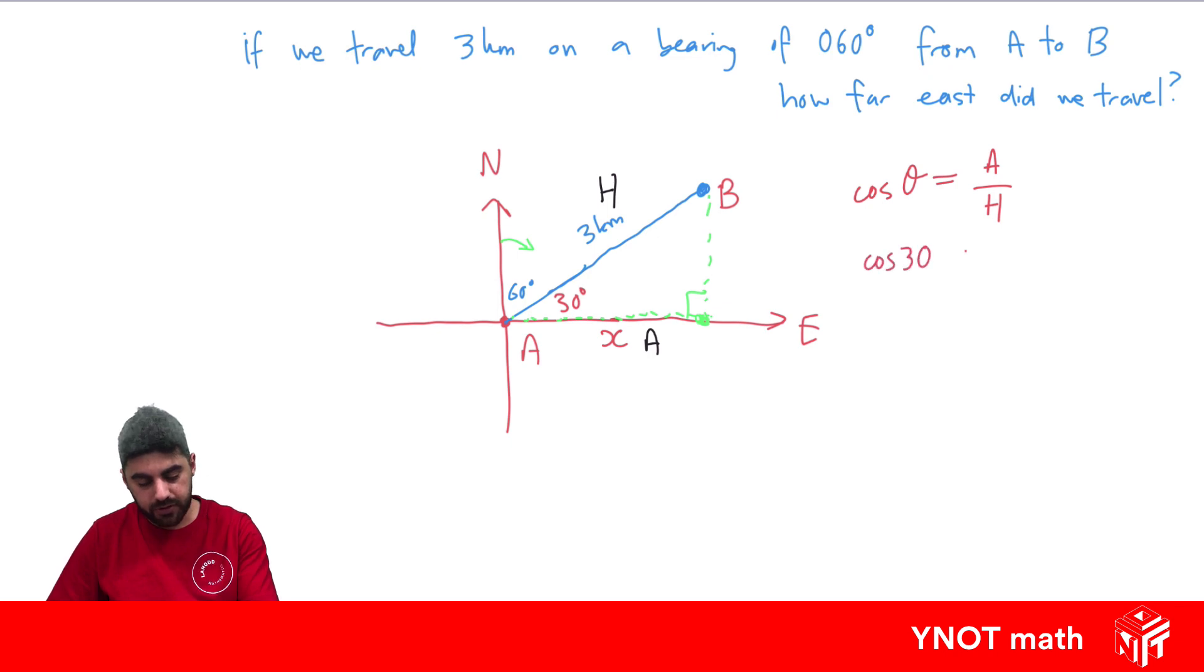Put in everything we know. The angle is 30, equals our adjacent side, which is x, over our hypotenuse, which is 3. Multiply both sides by 3 to get x by itself. So x equals 3 cos 30, and that's going to be 2.6 to 1 decimal place. 2.6 kilometres to 1 decimal place.